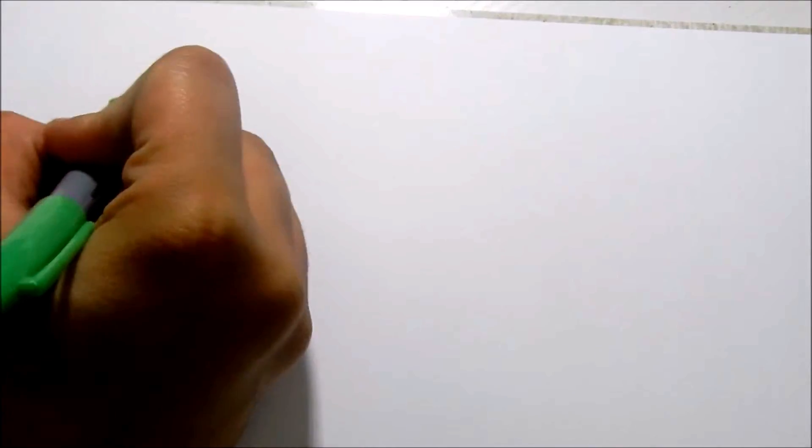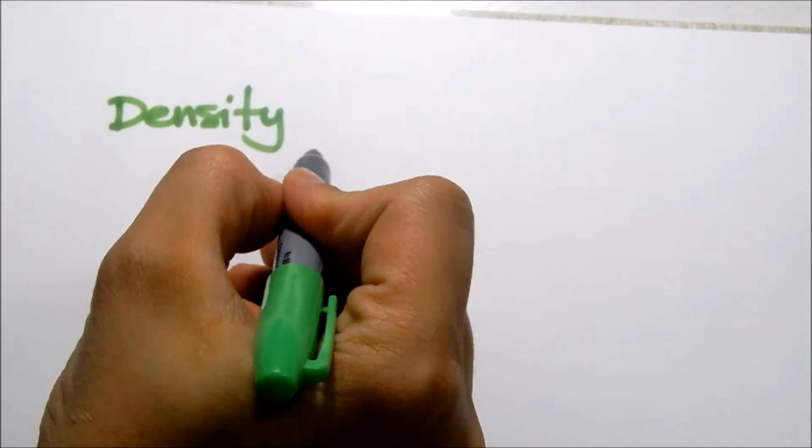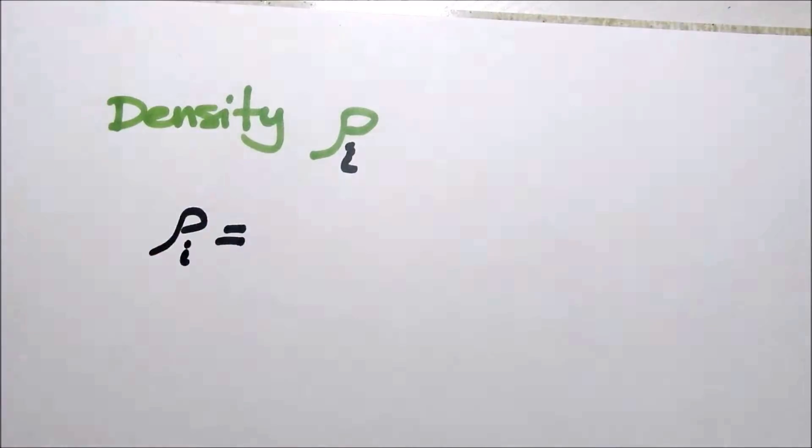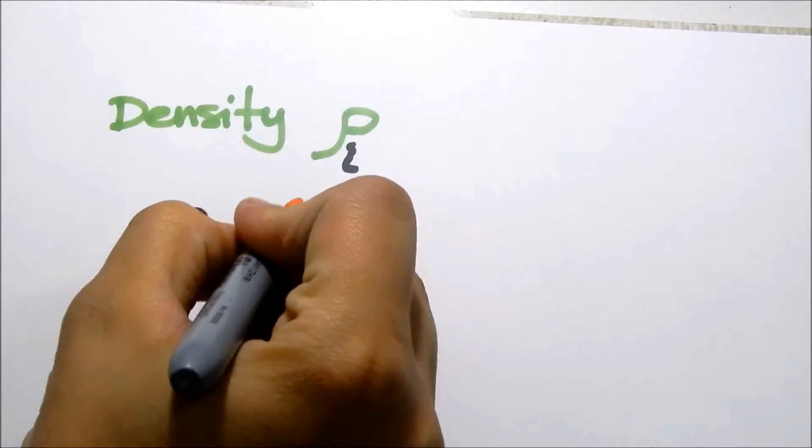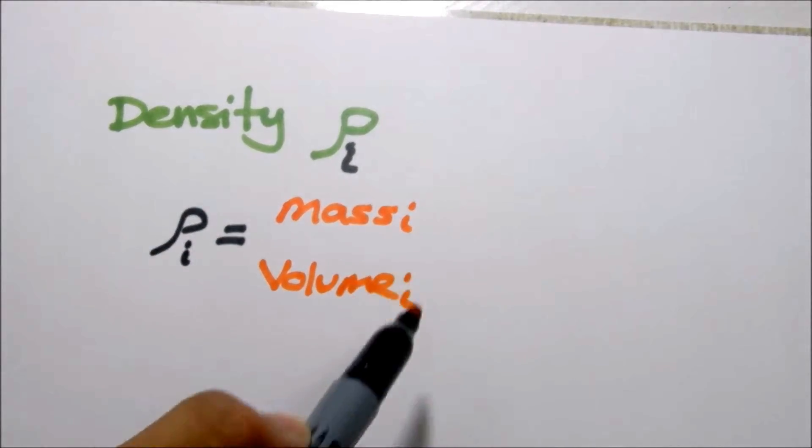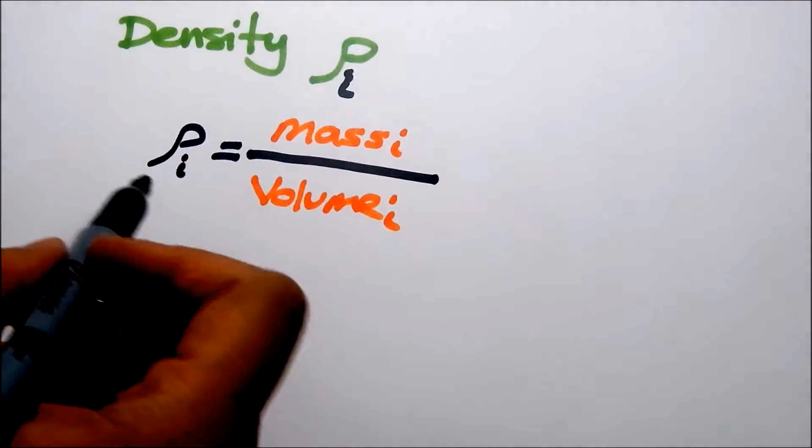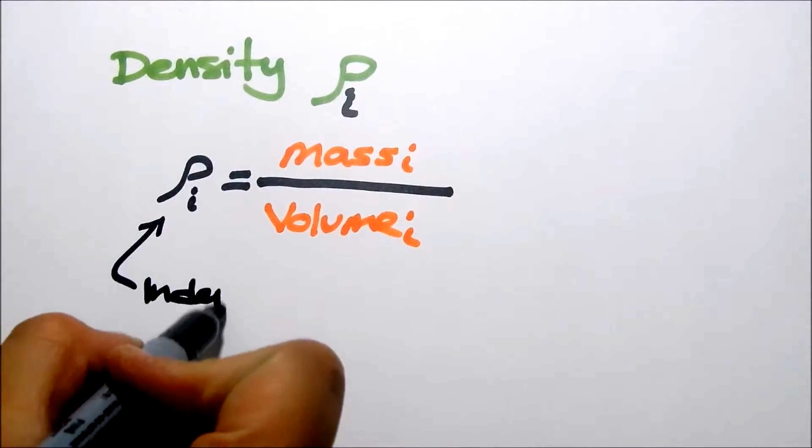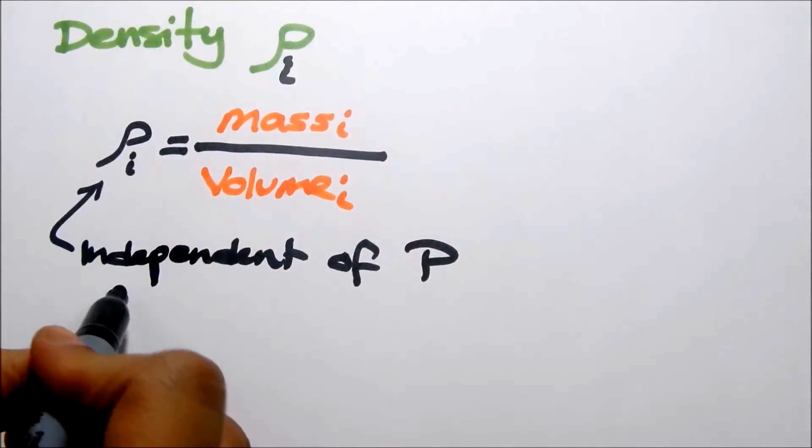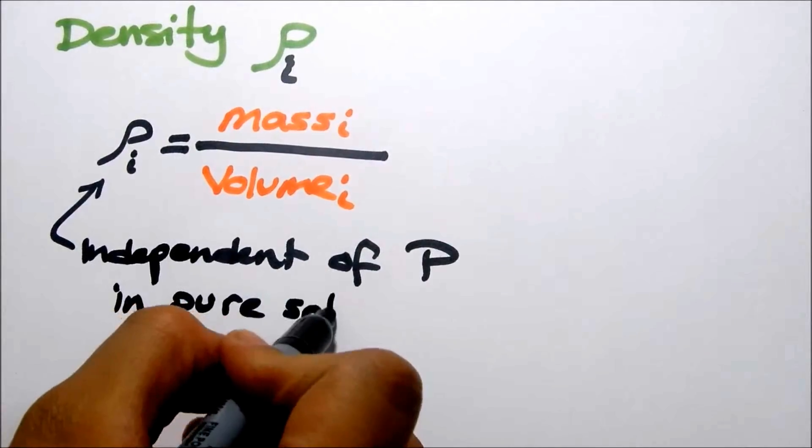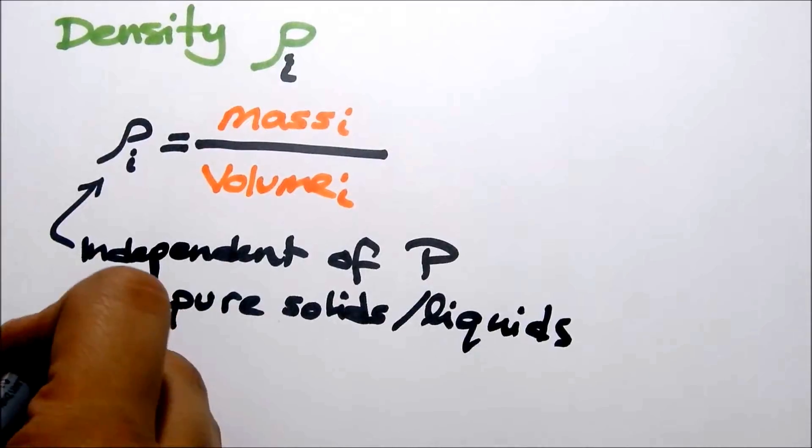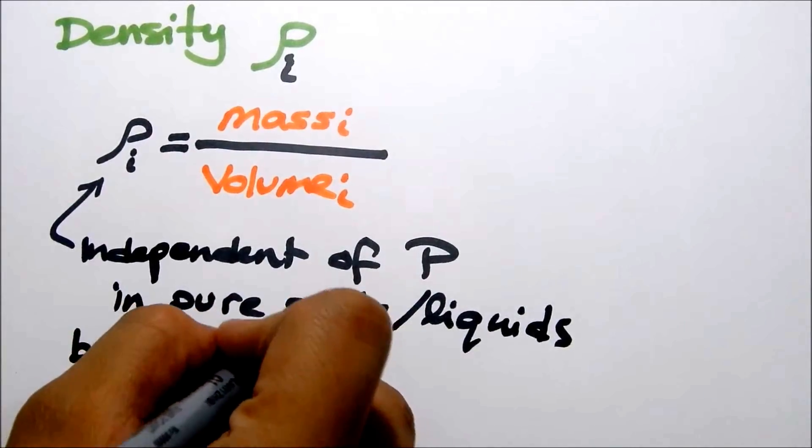Let's begin with 3.1, mass and volume. We'll start with something easy. We'll start with density. What is density? We call it rho. Rho_i for any component i. So we have rho_i, which is mass of that certain component divided by the volume of that certain component. Density is independent of pressure in pure solids and liquids.